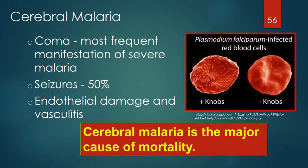Cerebral involvement is the major cause of mortality with malaria infection. Coma is the most frequent manifestation of severe malaria. Seizures are seen in about 50% of cerebral malaria cases. Symptoms and signs of cerebral malaria are caused by endothelial damage and vasculitis of small blood vessels in the brain. Plasmodium falciparum develops sticky knobs on infected red blood cells that adhere to the endothelial lining of blood vessels, obstructing blood flow and causing cerebral signs and symptoms. In cerebral malaria, no organisms are found in cerebrospinal fluid since there is no invasion of brain tissue or meninges — cerebral malaria is a vascular disease.